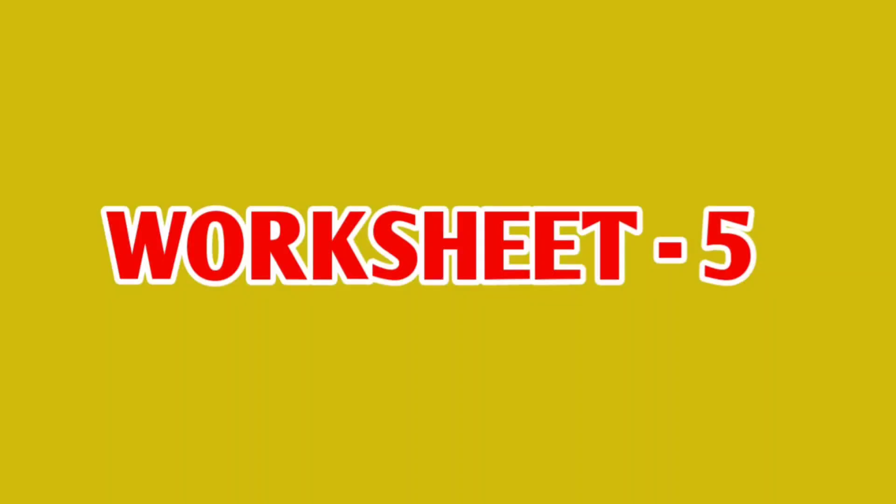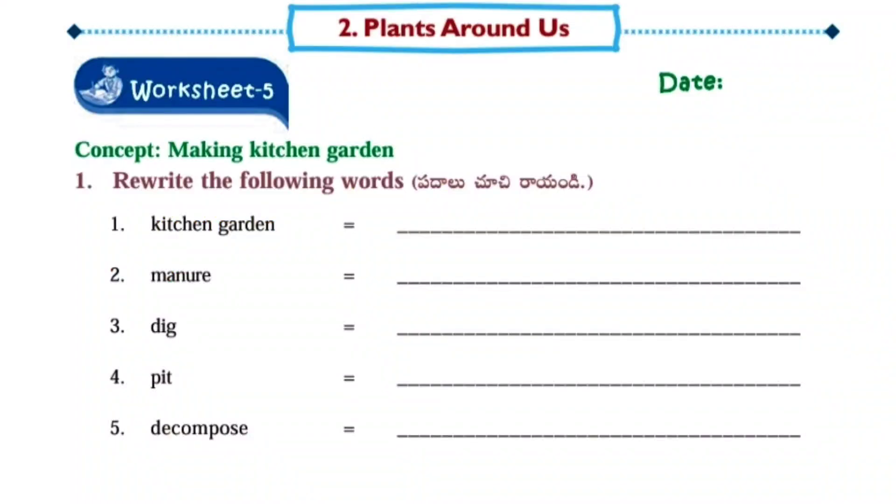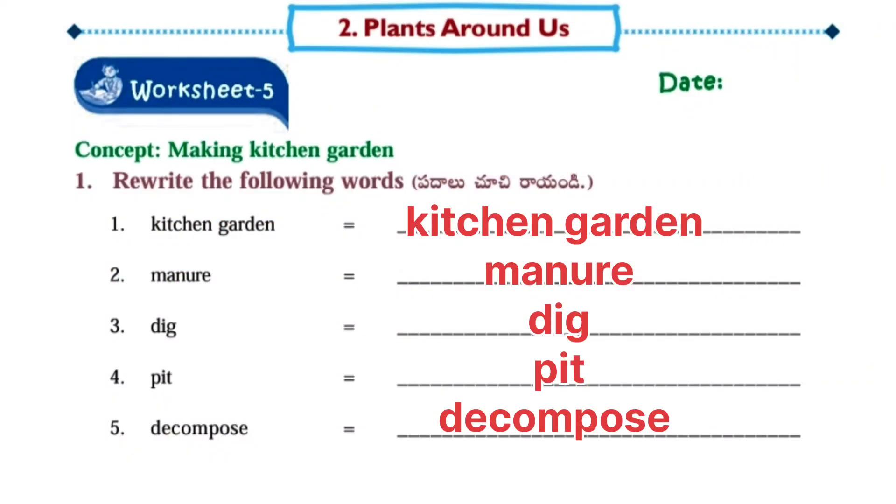Next Worksheet Number 5: Making Kitchen Garden. Rewrite the following words: Kitchen Garden, Manure, Dig, Fit, Decompose.